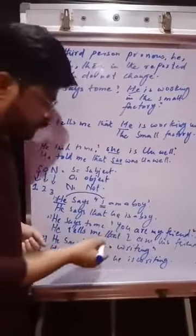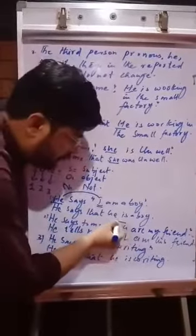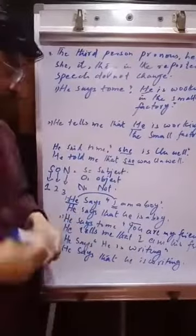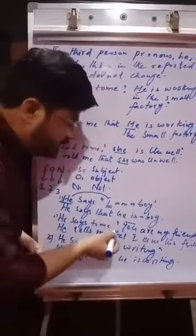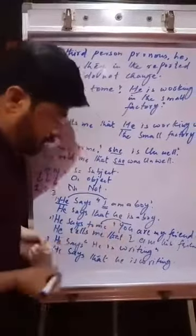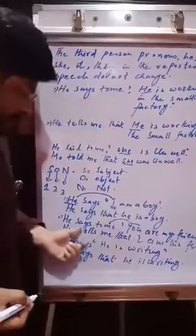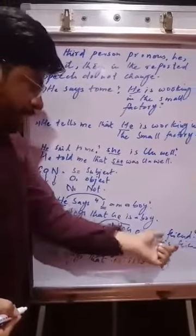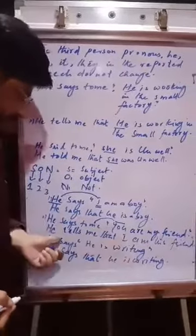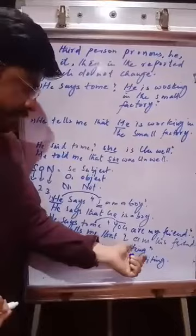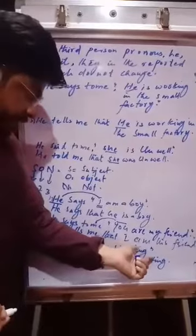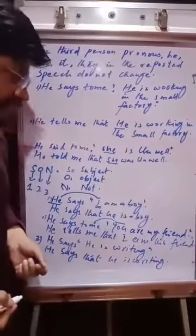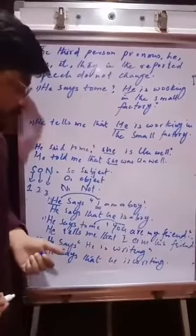For the second person pronoun 'you' — O in the SON formula — if 'you' is present, we have to focus on the object of the reporting speech. For example, 'He says to me that you are my friend' becomes 'He tells me that I am his friend.'